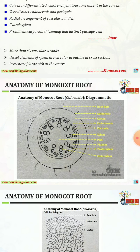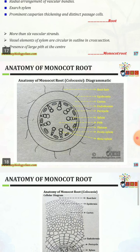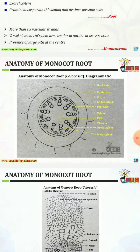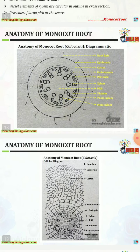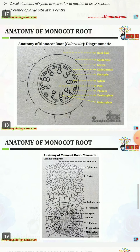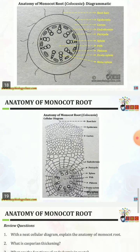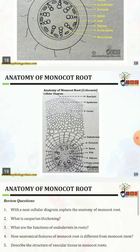More than six vascular strands are present; vessel elements of xylem are circular in outline in cross-section; presence of a large pith in the center. A complete anatomical diagram of a colored monocot root cross-section is depicted on screen.